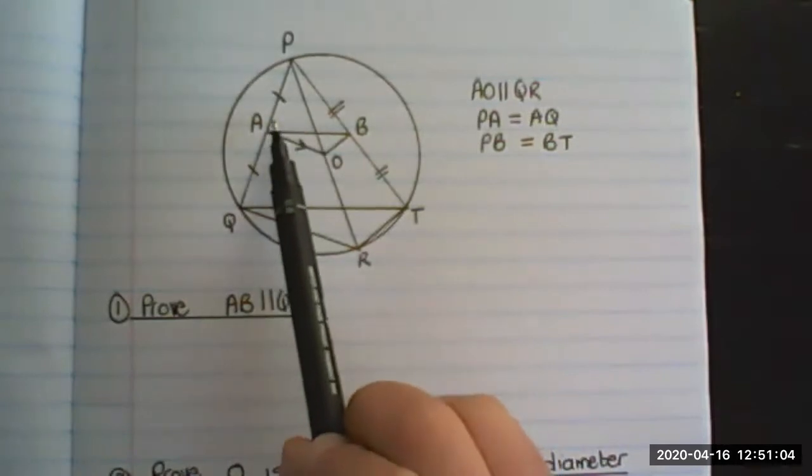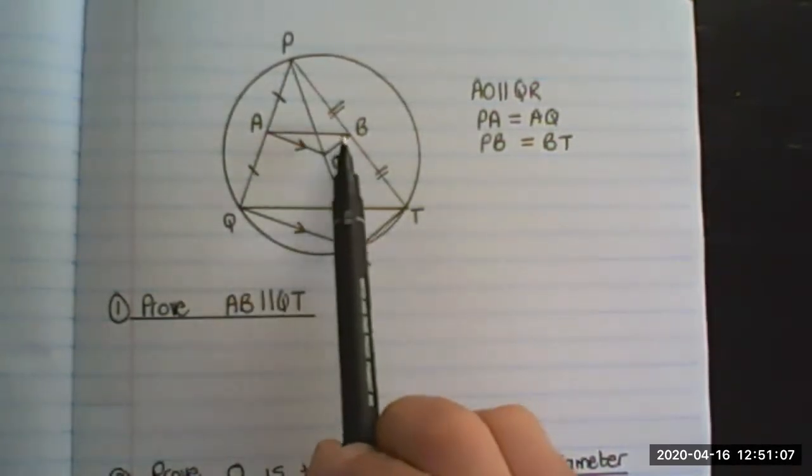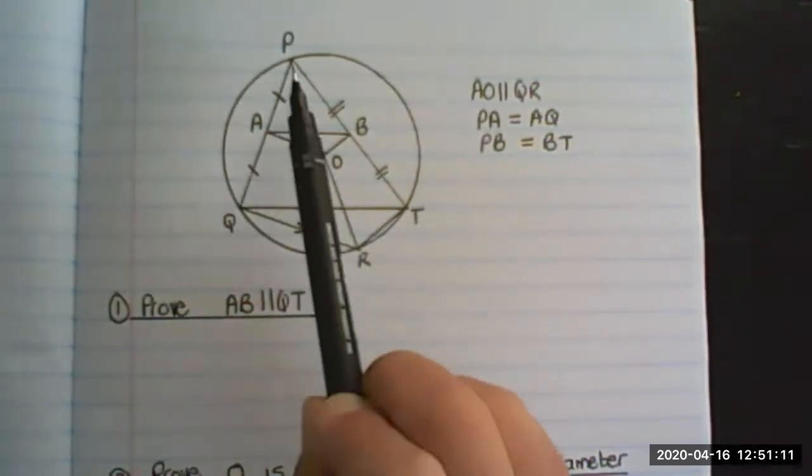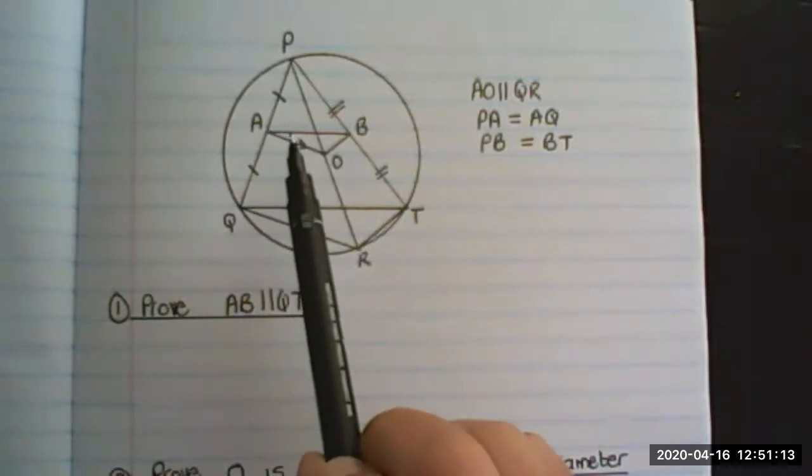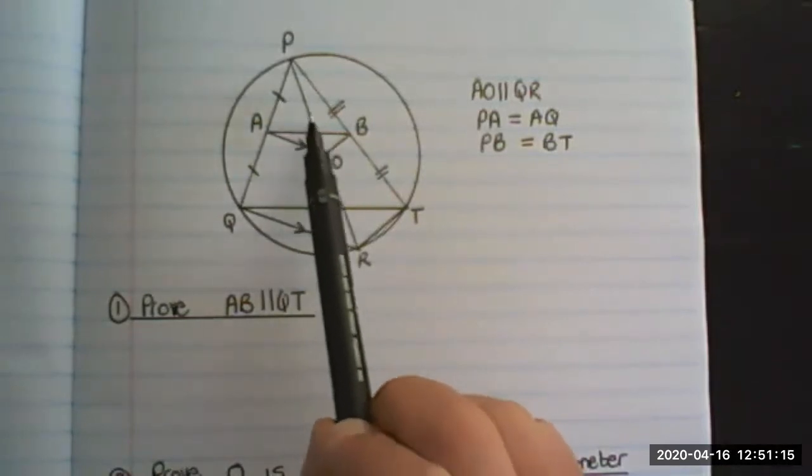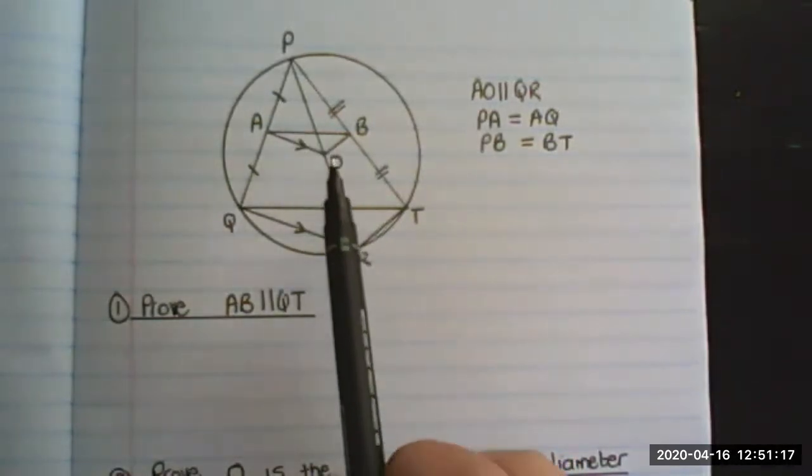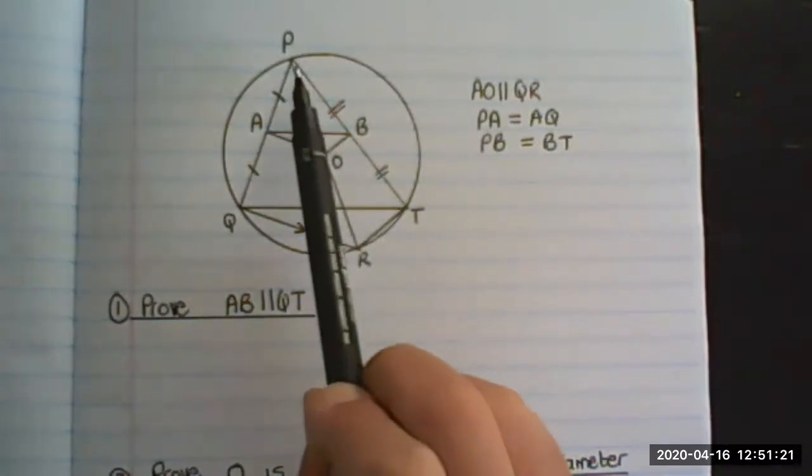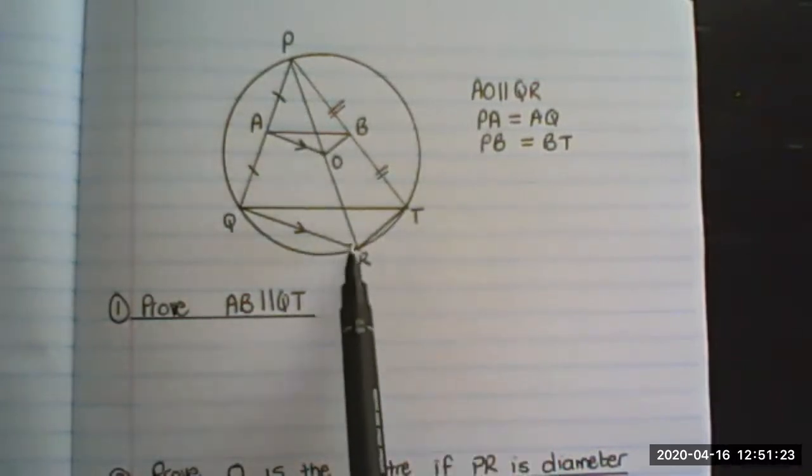PA is equals to AQ and PB is equals to BT. Now, if you look at this triangle PQR, we can already see that PO would be equal to OR, midpoint theorem. And now that I have PO equal to OR, I can say that OB is parallel to RT.